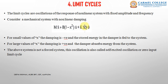Limit cycles are oscillations of fixed amplitude and frequency without any forcing factor. The difference between sub-harmonic oscillation and limit cycle is: in sub-harmonic oscillation, the nonlinear system is excited by a sinusoidal input and the output frequency is an integral sub-multiple of the forcing frequency. In the case of limit cycle, the response has fixed amplitude and frequency, and the input is equal to zero. These oscillations are called self-excited oscillations or zero-input limit cycle.